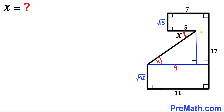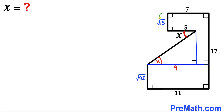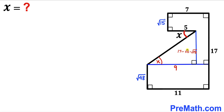Now we are interested in calculating this side length. This side length is going to equal the whole vertical side length minus two segments: 17 − √15 − √48. If we simplify this expression, it is approximately equal to 6.199 units.